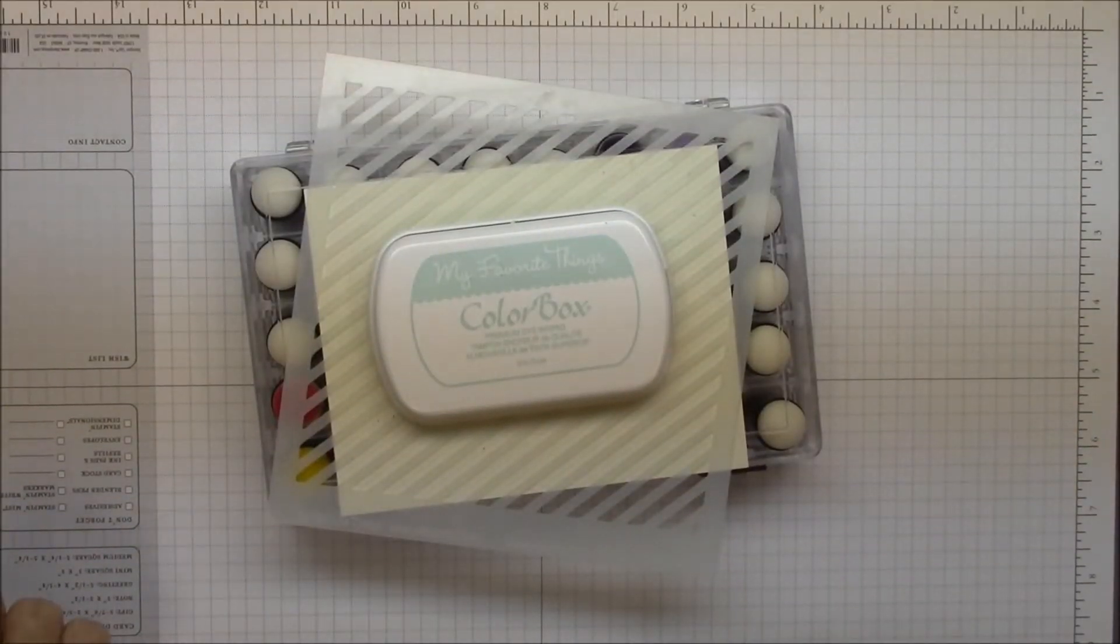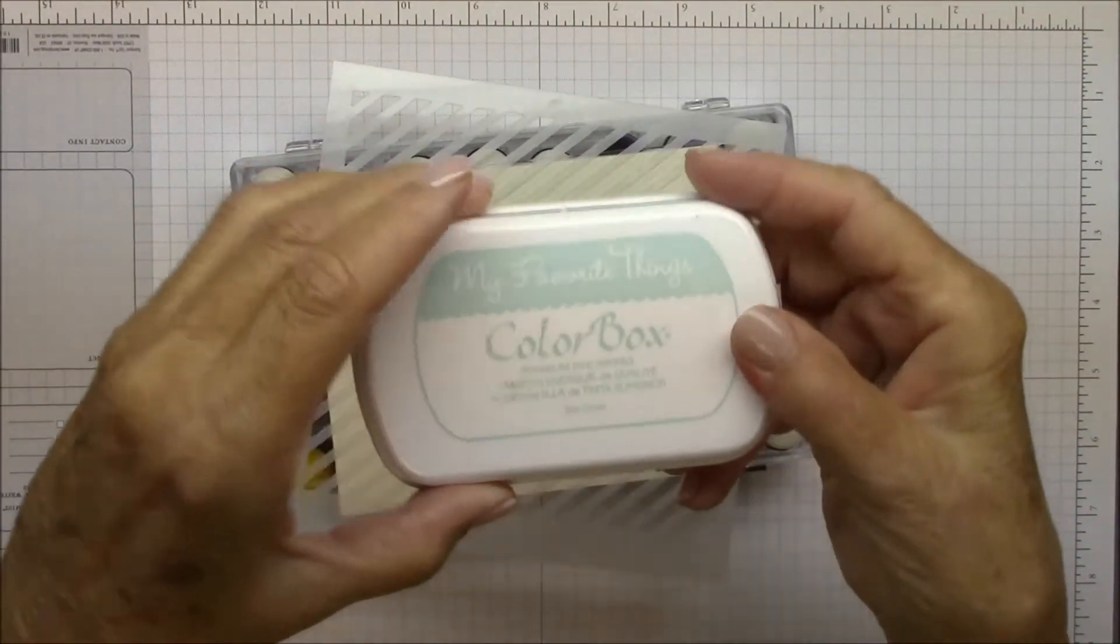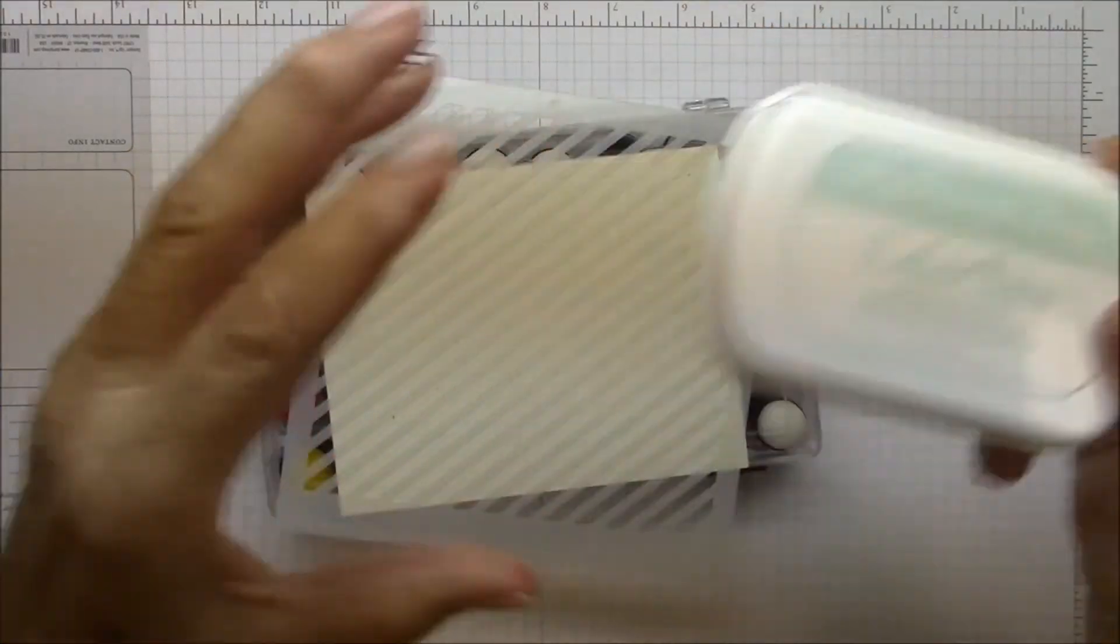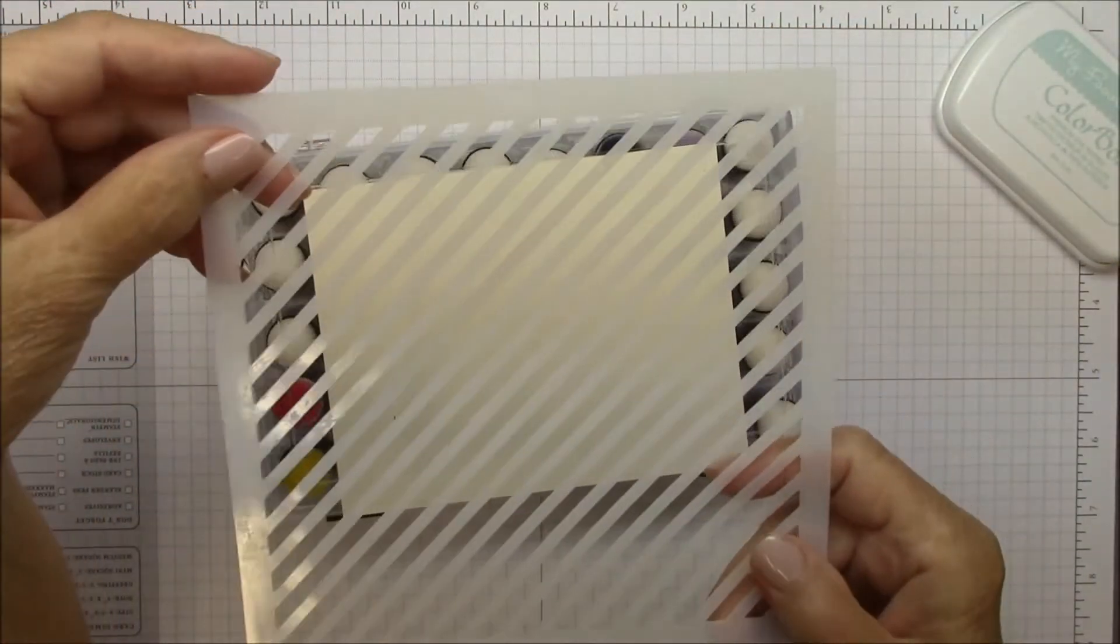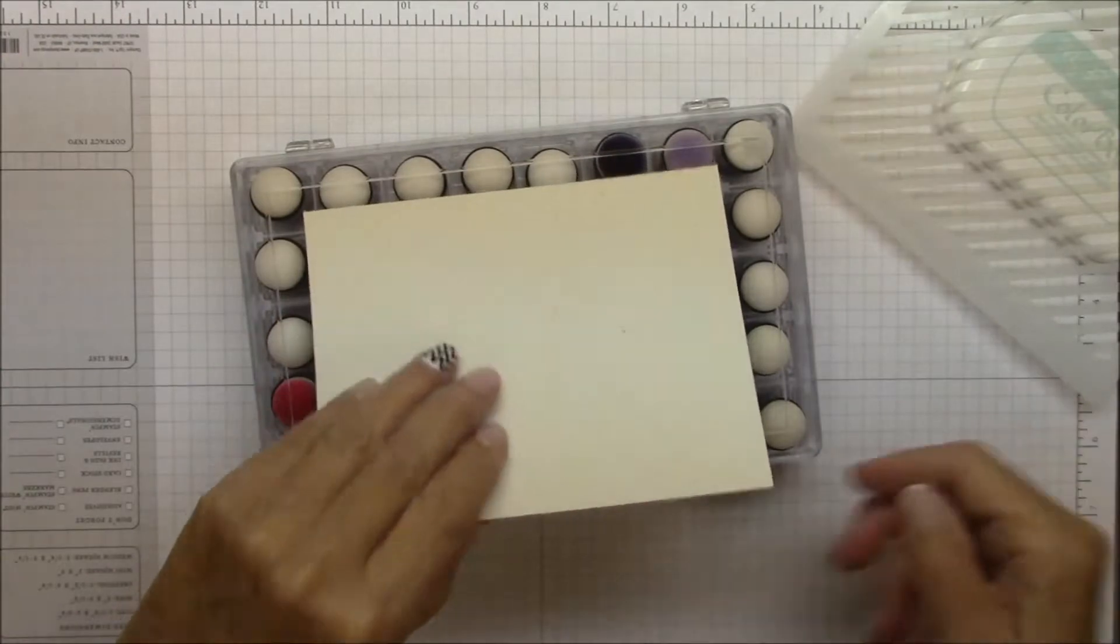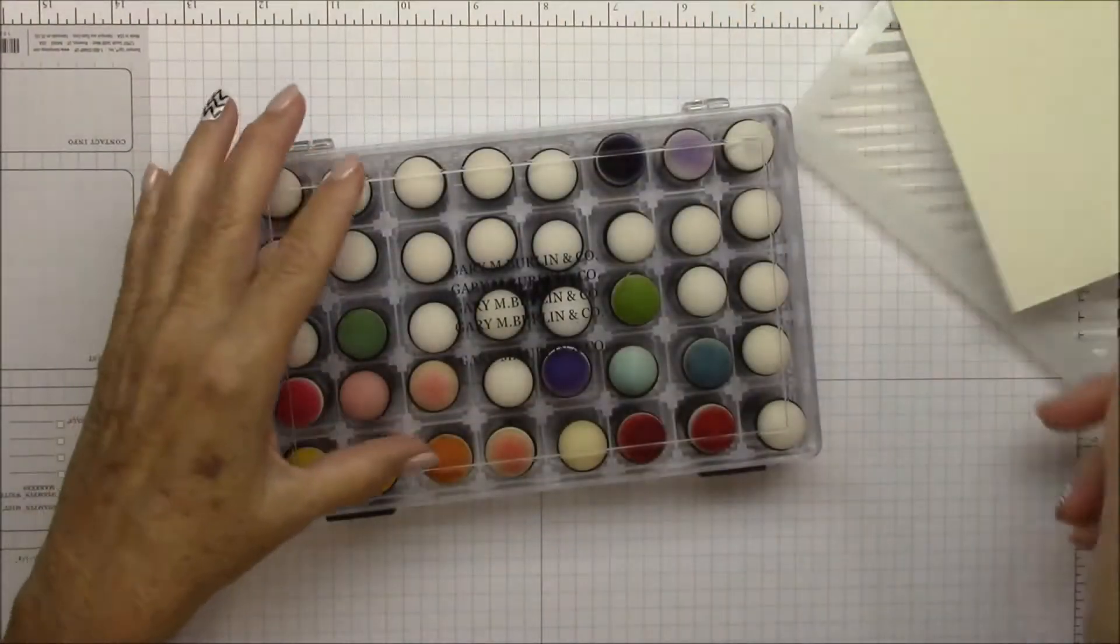Hey everybody, it's Barbara. I'm back with another in the background video. Today we're going to be using snow cone ink, diagonal stripe stencil, and primitive white cardstock for our card base. Of course, here's my handy daubers.